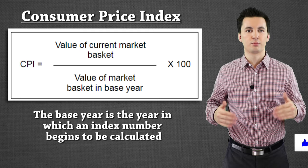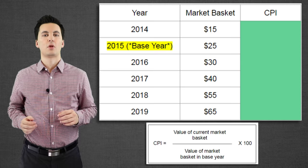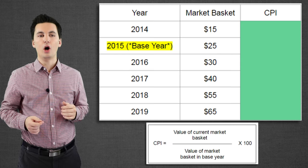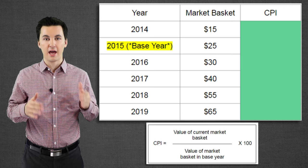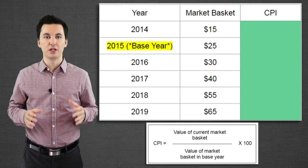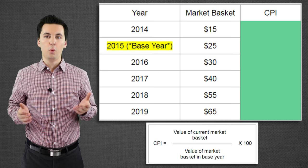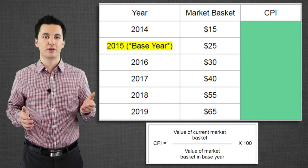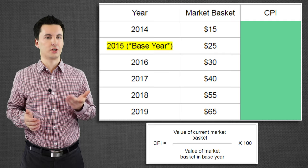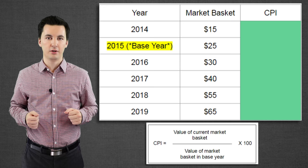Let's look at this in practice — it's easier to visualize with actual numbers. You can see I have a couple of different years, 2014 all the way to 2019. We've selected 2015 as our base year, which is the year we'll use to compare the basket value to everything else. One important thing to note: the CPI for the base year will always be 100, every single time. The reason is if I take the current value of the market basket and divide it by the base year, I'm dividing the same number by itself — so 25 divided by 25 equals 1, times 100 equals 100.